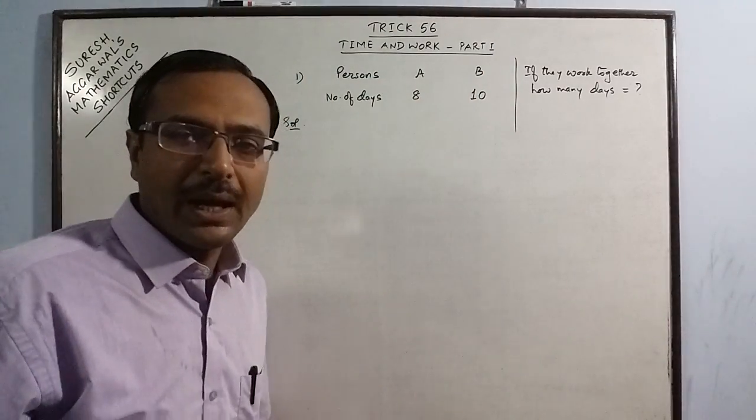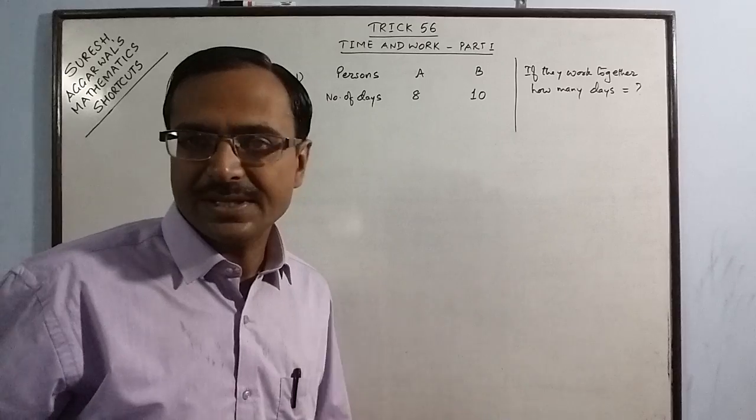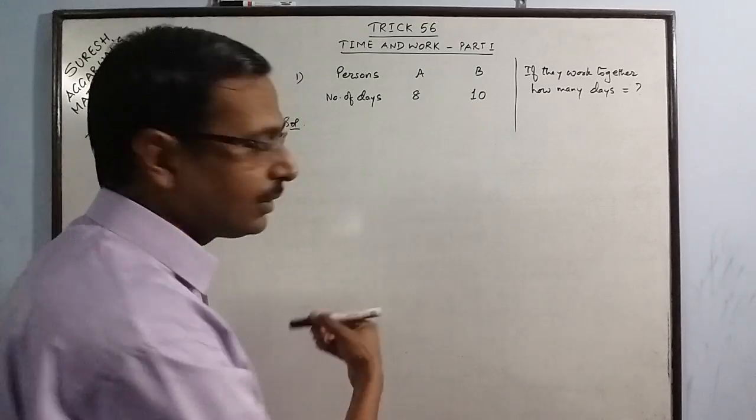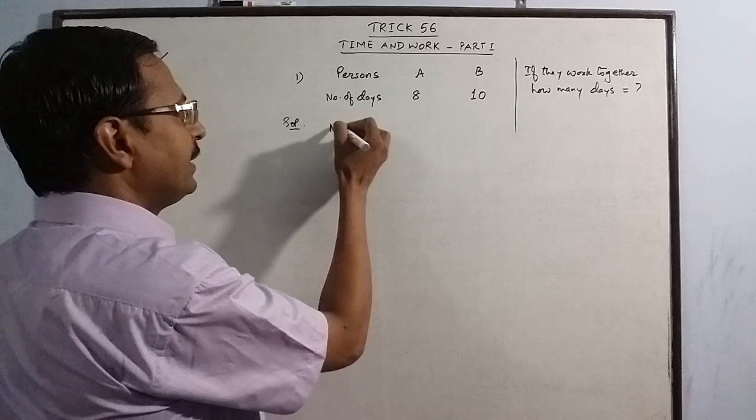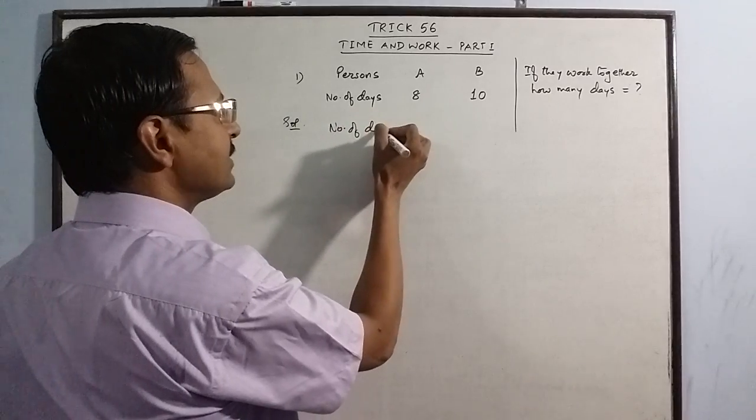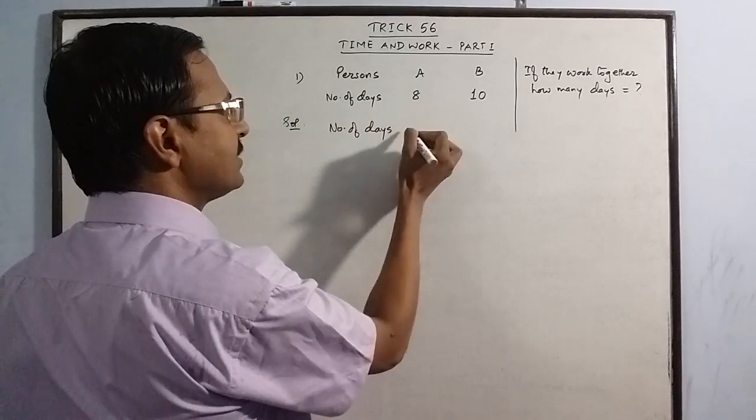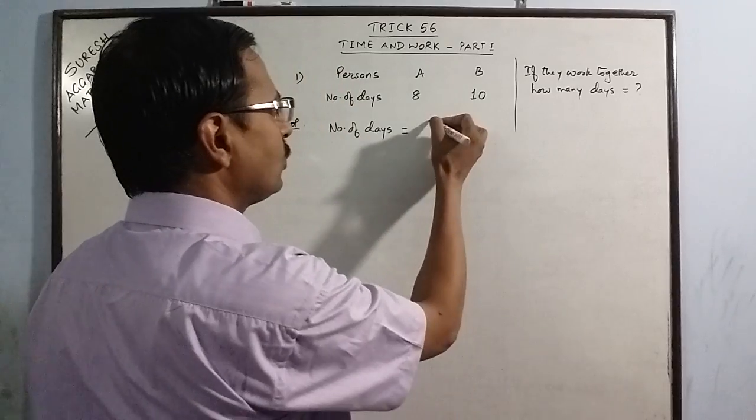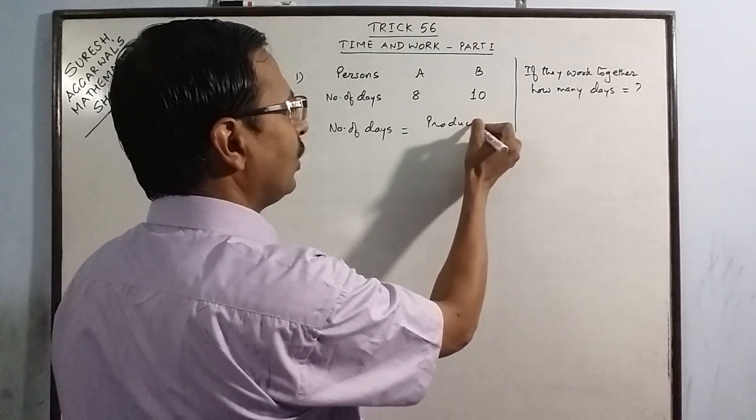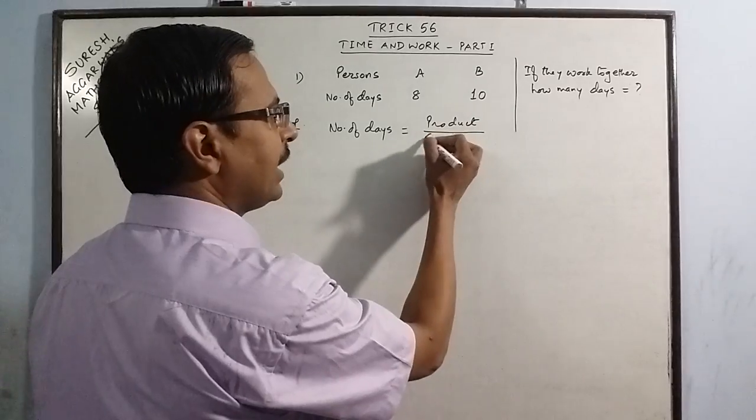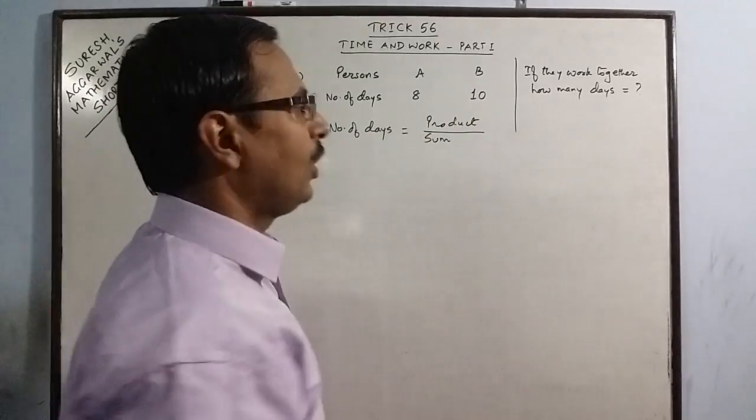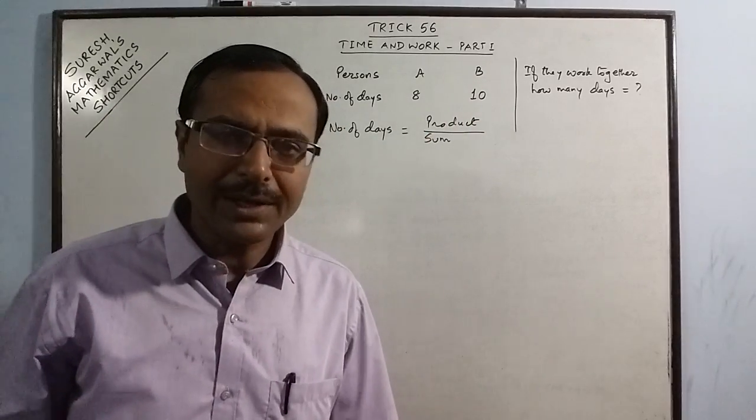For solving this, you just need to remember the type of this question. There are two persons whose individual times are given and we have to find how many days will they take if they work together. This is the particular type of question and this rule can be applied only to this type of question.